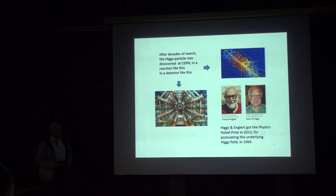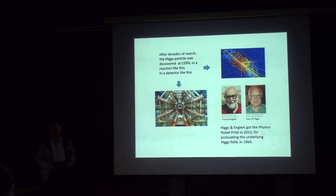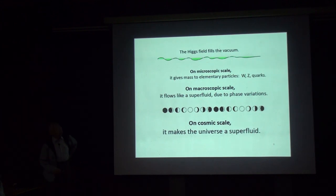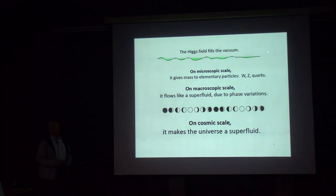Higgs and others received the Nobel Prize for introducing the underlying Higgs field, which implied that there might be such a particle. What I want to talk about today is the implication of this underlying field on cosmology. The Higgs field is a field that fills the vacuum, and on a microscopic scale it gives mass to elementary particles — the W, Z, and quarks.